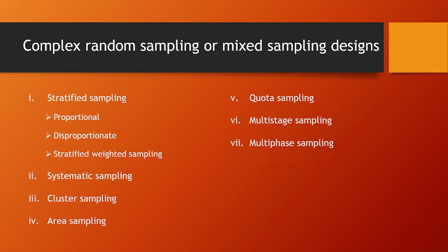Then there is multi-phase sampling. In multi-phase sampling, the first step is to select a sample at the first phase and collect data on some suitable characteristics. Then a sub-sample of these units is selected for the main survey.